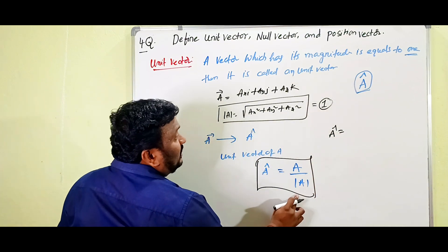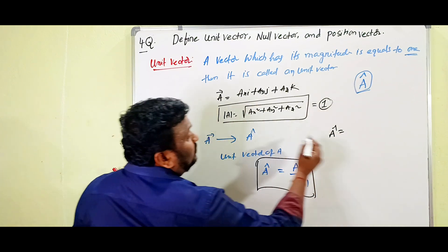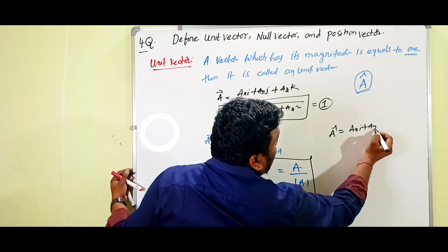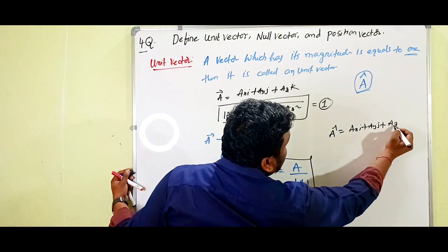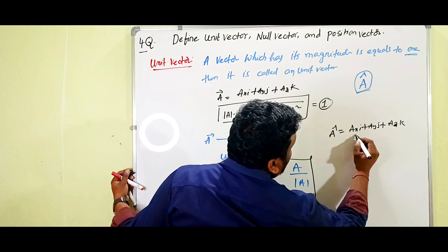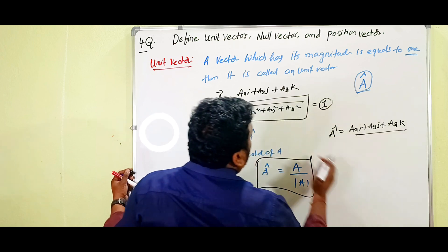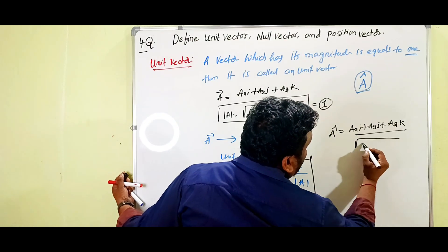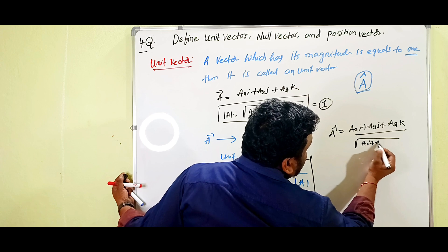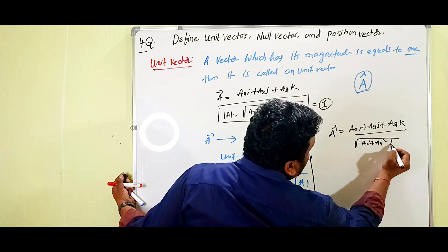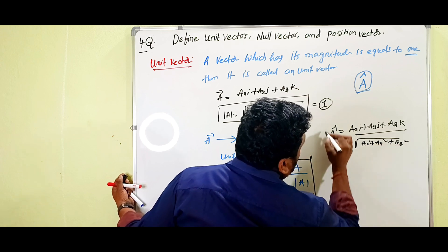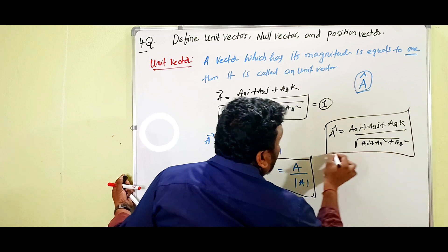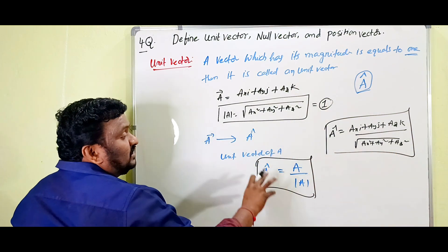So A-cap equals A by mod A, where A is Ax·i + Ay·j + Az·k, and mod A is the square root of Ax² + Ay² + Az². This gives us the complete unit vector of A.